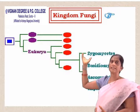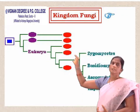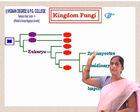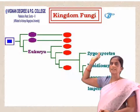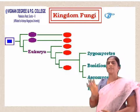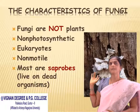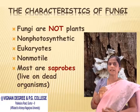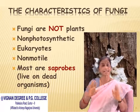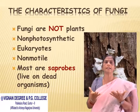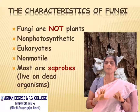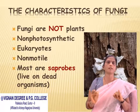Here you can see the classification structure. Fungi come under Eukaryota and are divided into Zygomycetes, Basidiomycetes, Ascomycetes, and imperfect fungi. Coming to the characteristics of fungi — fungi are not plants; they belong to a separate kingdom. They are not photosynthetic and do not consist of chlorophyll; they are achlorophyllic organisms.